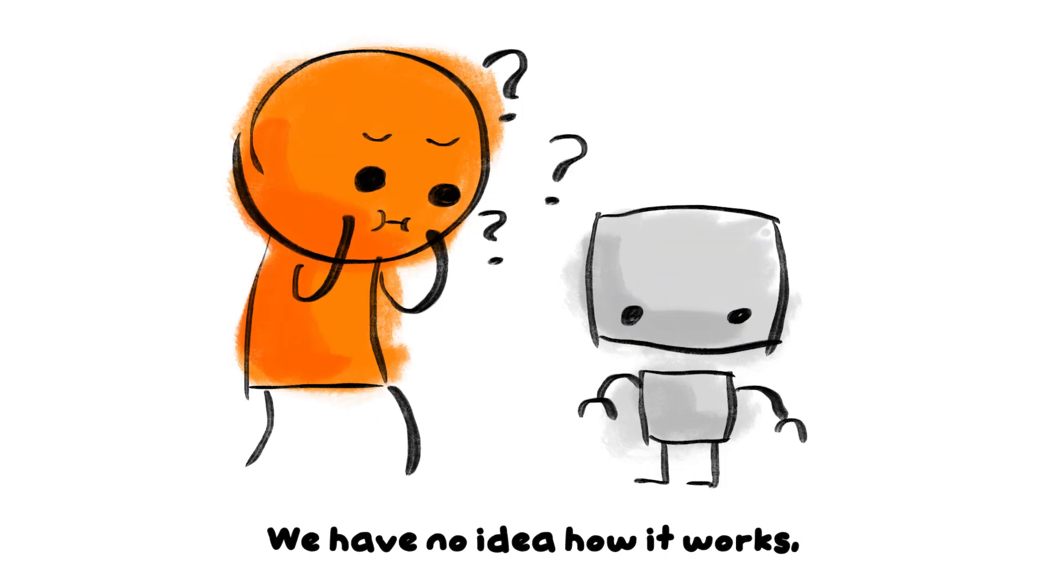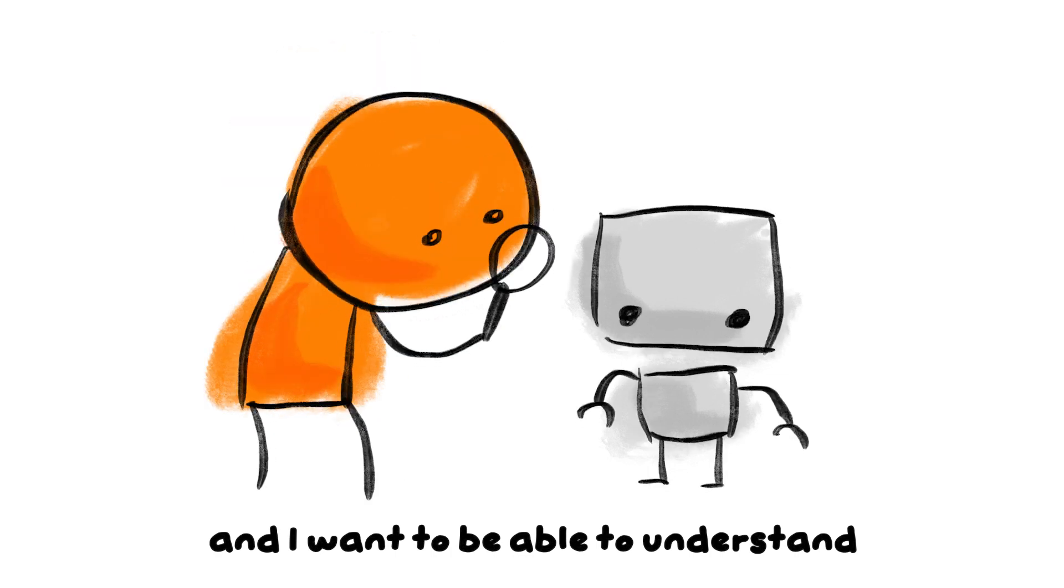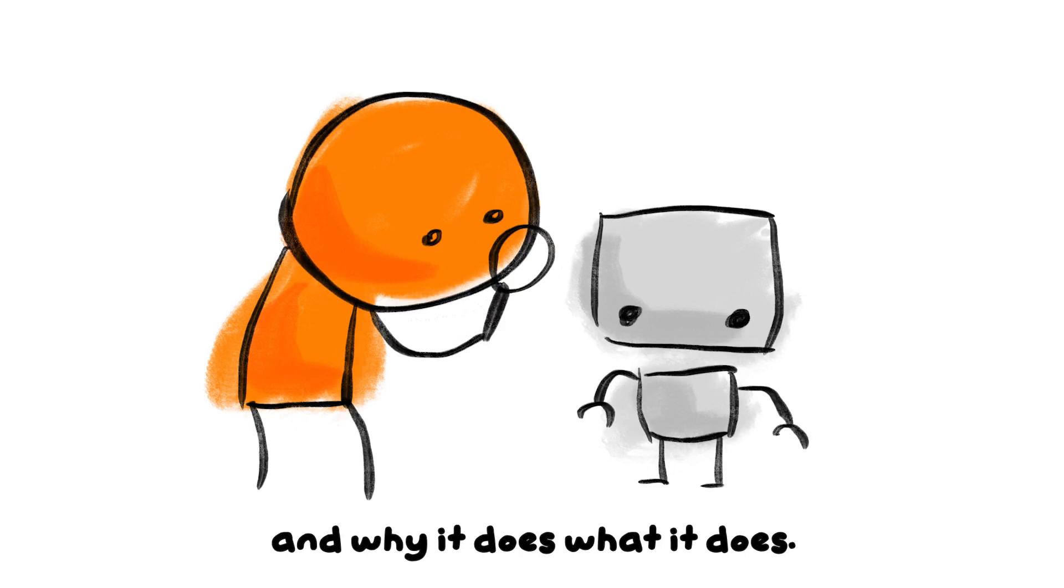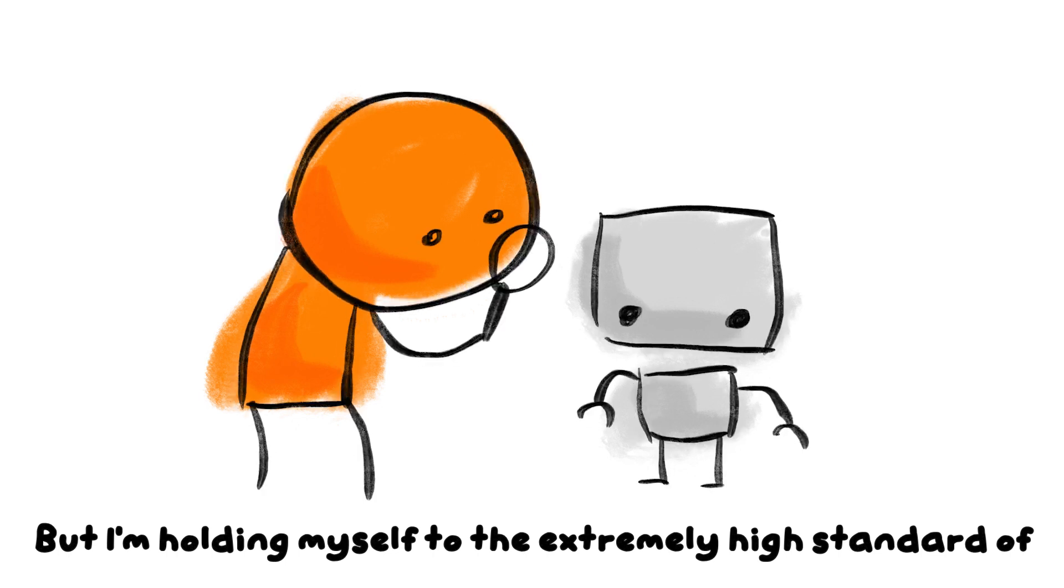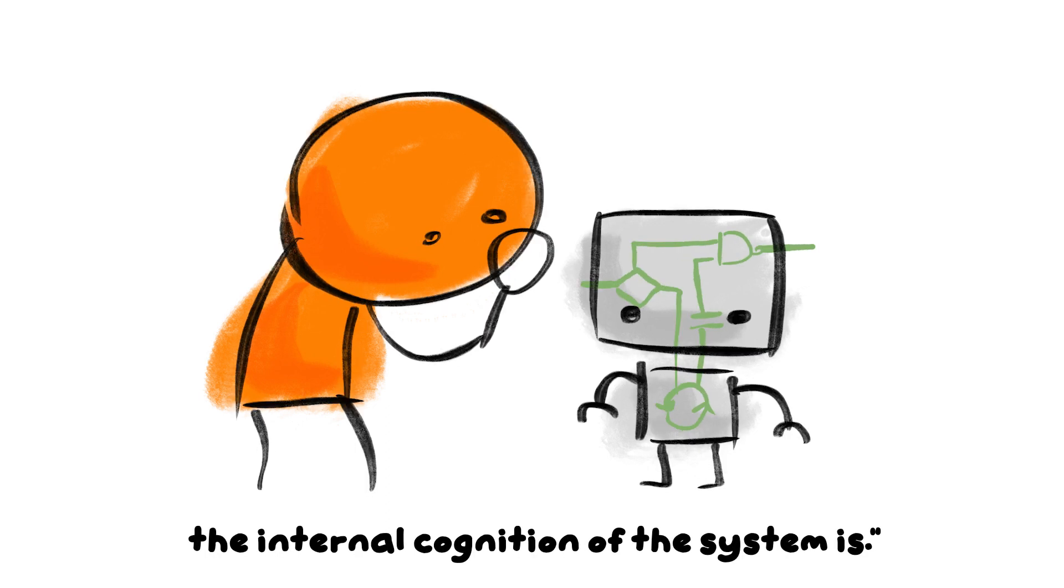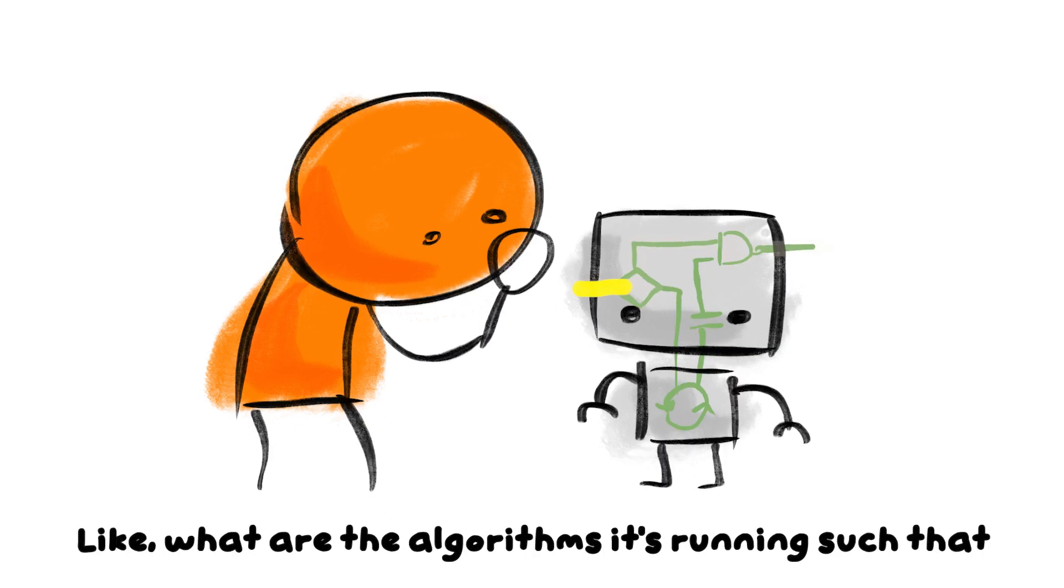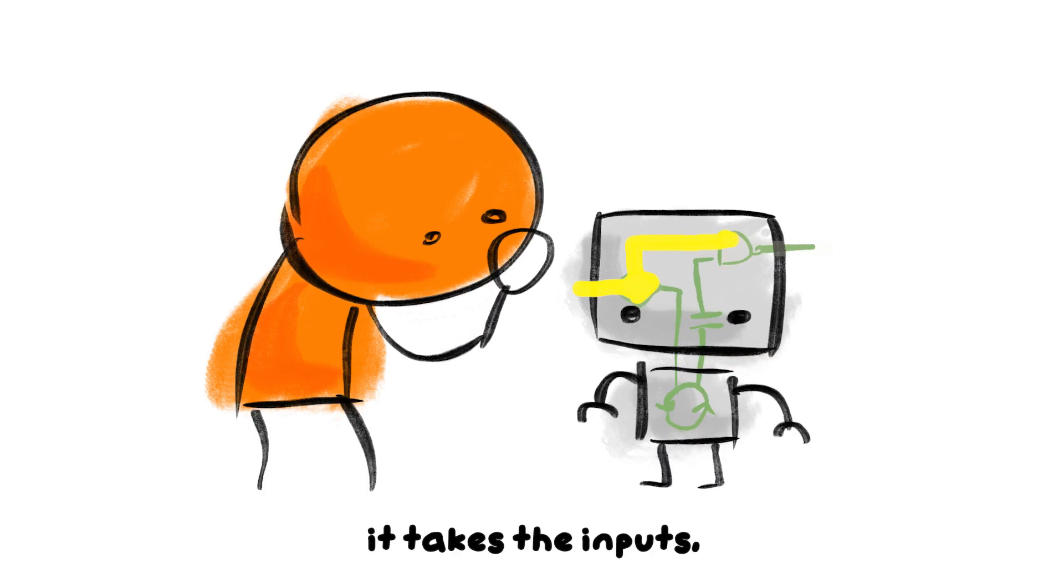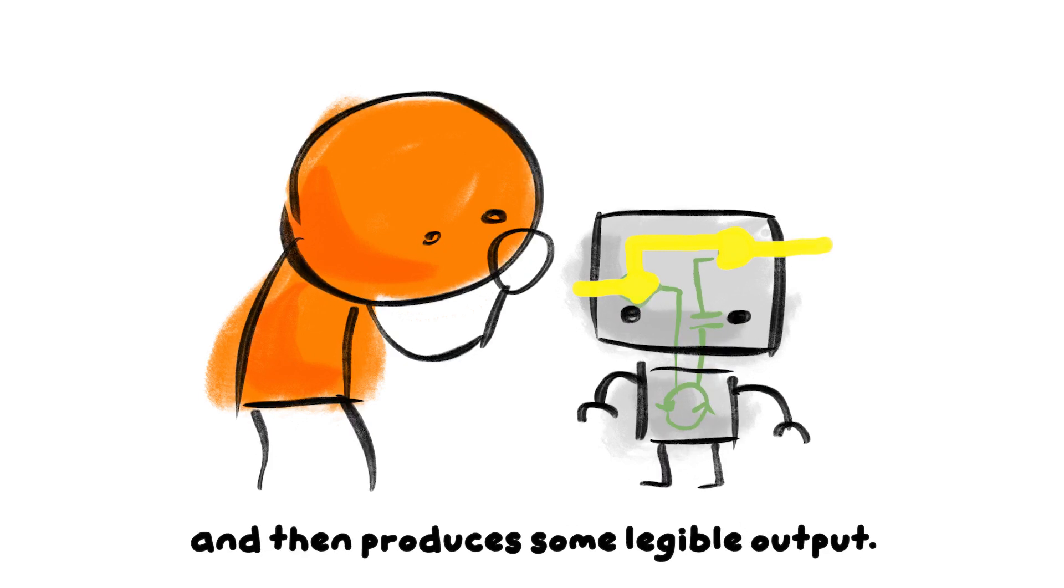We have no idea how it works, and I want to be able to understand what it has actually learned and why it does what it does. But I'm holding myself to the extremely high standard of wanting to actually understand what the internal cognition of the system is—like what are the algorithms it's running such that it takes the inputs, produces a series of intermediate things, and then produces some legible output.